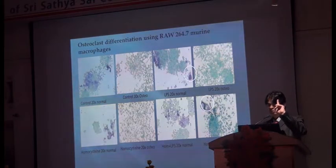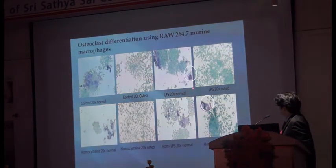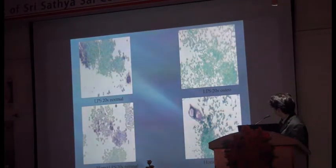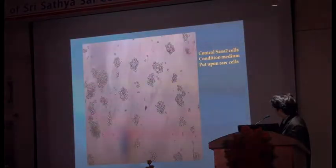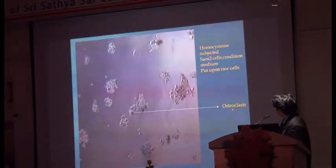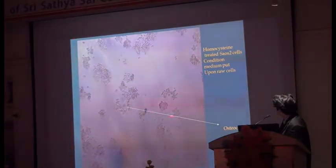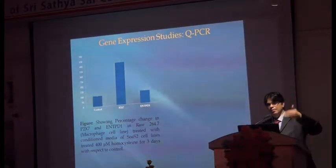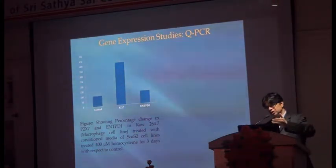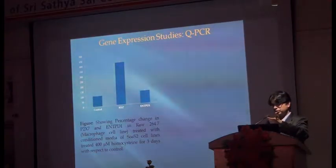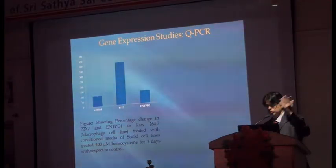So in the presence of homocysteine, an osteoblast is actually facilitating the making of osteoclasts. RANKL is released from homocysteine-treated osteoblasts, and that RANKL converts the macrophage into an osteoclast. That is the key mechanism we demonstrated.